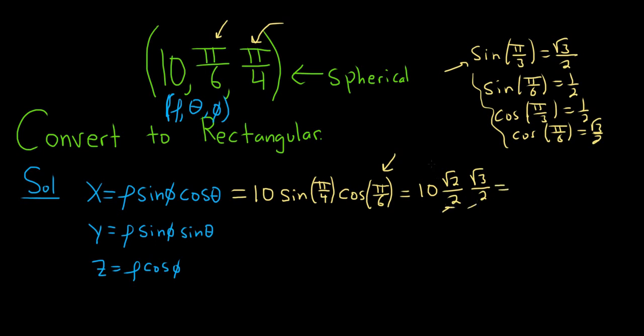So 2 times 2 is 4, and then we have a 10 here, so 10 over 4, that's 5 halves. And then you can multiply the numbers inside the square roots, and that will give you the square root of 6. So that's our x value.